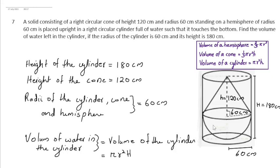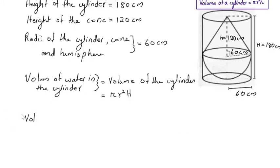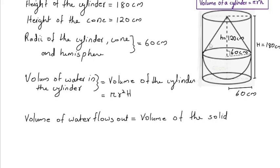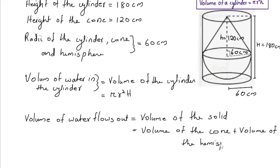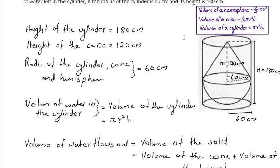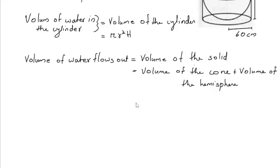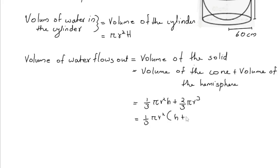The volume of water that flows out is equal to the volume of the solid. The volume of the solid is the sum of the volumes of the conical and hemispherical parts. Volume of the cone is (1/3) pi r squared h, and the volume of the hemisphere is (2/3) pi r cubed. Taking (1/3) pi r squared as common, this gives (1/3) pi r squared times (h + 2r).